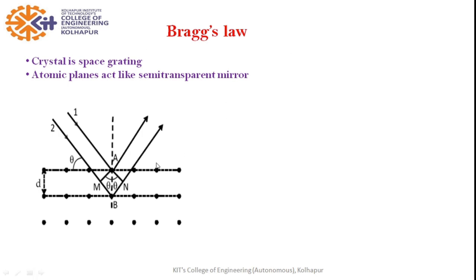This is the diagram for derivation of Bragg's law. We can see here that these are the atomic planes. The variable d is the interplanar distance, and the diagram shows the X-ray beam and its reflection from successive atomic planes, because the planes act as semi-transparent mirrors. Diffraction and reflection are interchangeable, so we can use either the term Bragg's reflection or Bragg's diffraction. When the X-ray beam is incident on the crystal, it is diffracted by atomic planes, giving the condition 2d sinθ = nλ — this is Bragg's law.